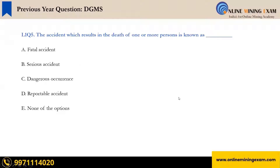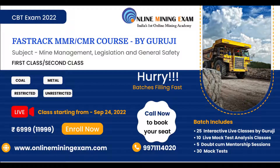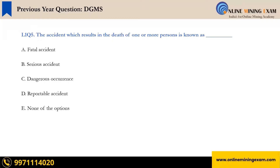Now let's come to the next question. This question has again been asked by the DJMS: 'The accident which results in death of one or more persons is known as — fatal accident, serious accident, dangerous occurrence, reportable accident, or none of the above.' These are the questions which have been asked by the DJMS. I have not made them up, and we will discuss all the questions.